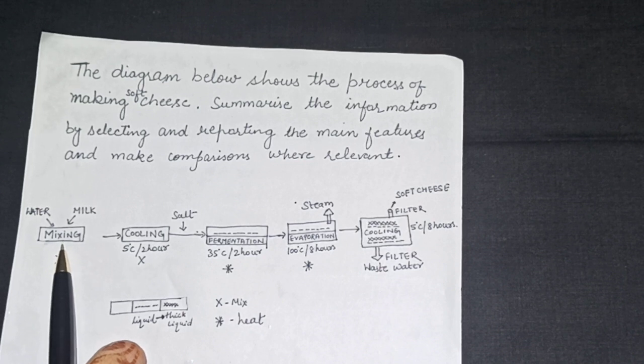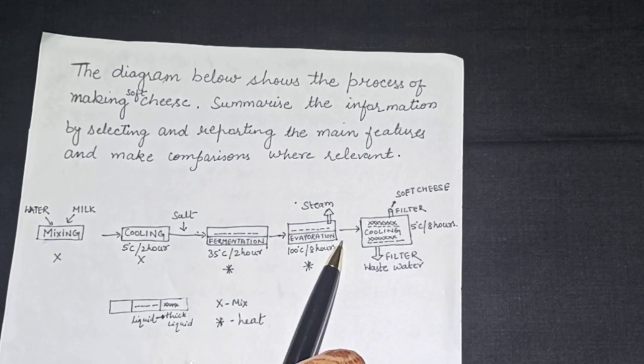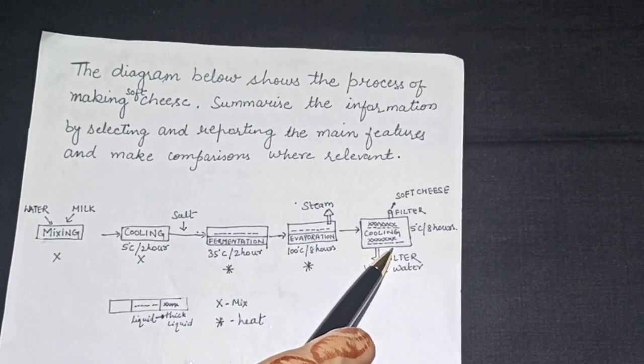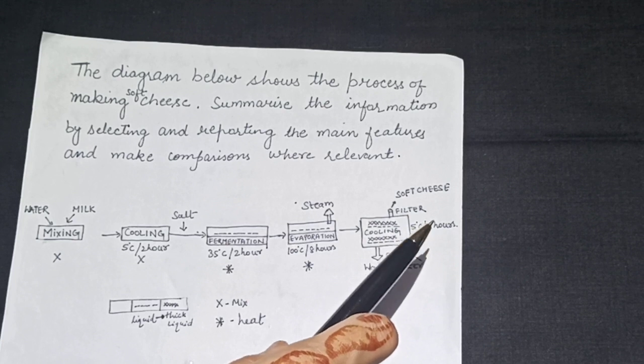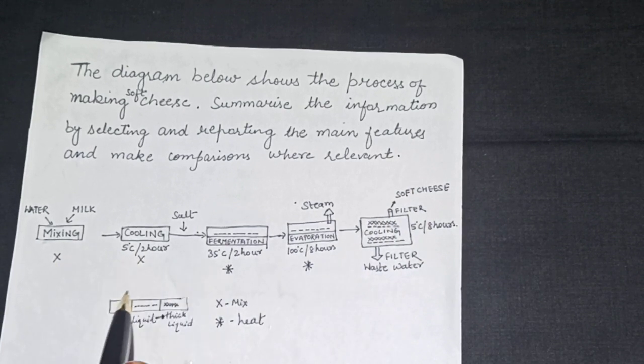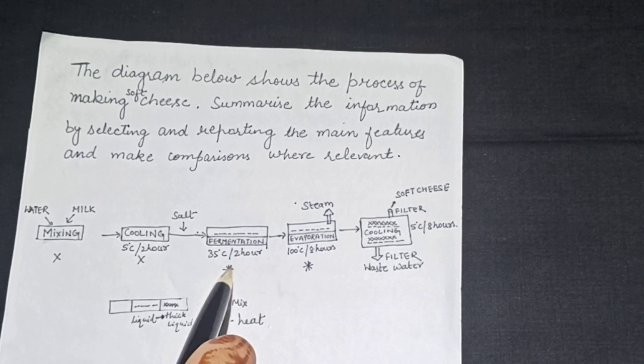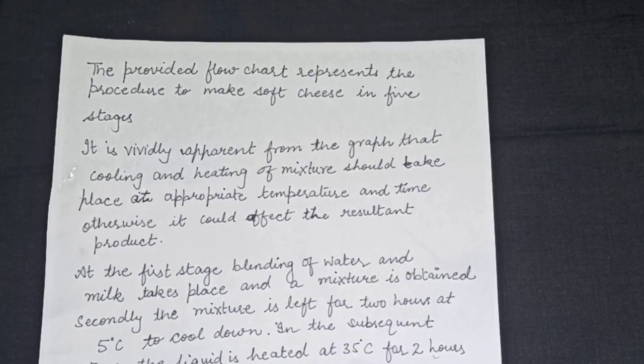First step is mixing, after that cooling, then fermentation and then evaporation and last step is also cooling of the resultant product. Now this cross means mixture, this star means heat and this dash means liquid and this cross pattern means thick liquid. So let's have a look how we will write it.